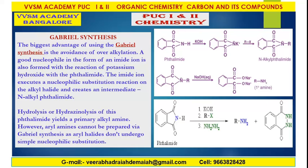The imide ion executes a nucleophilic substitution reaction on the alkyl halide and creates an intermediate N-alkyl phthalimide. Hydrolysis of this N-alkyl phthalimide yields primary alkyl amines. Aryl halides do not undergo simple nucleophilic substitution, so aromatic primary amines cannot be prepared by Gabriel synthesis.